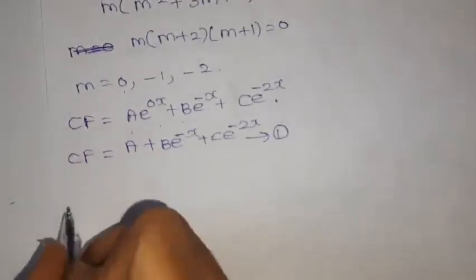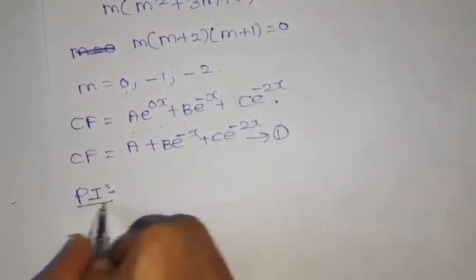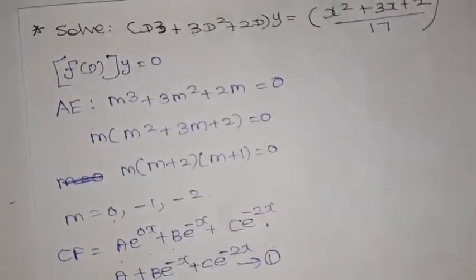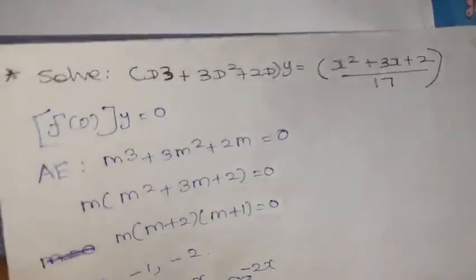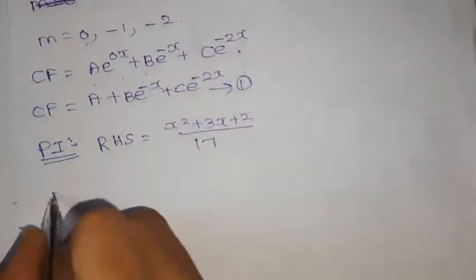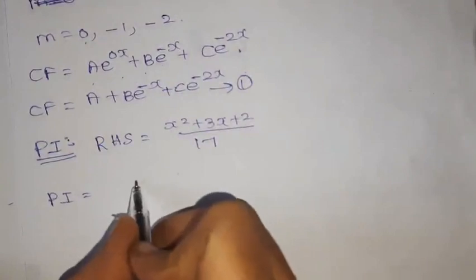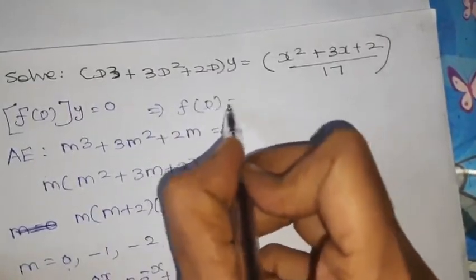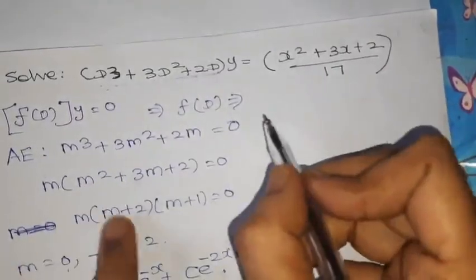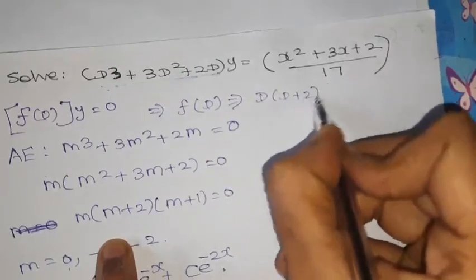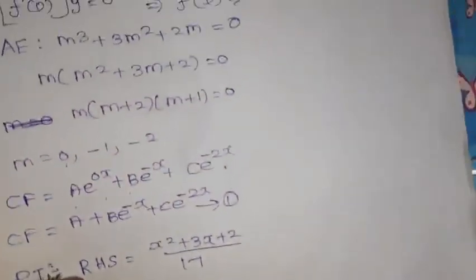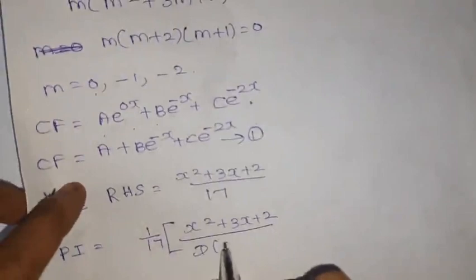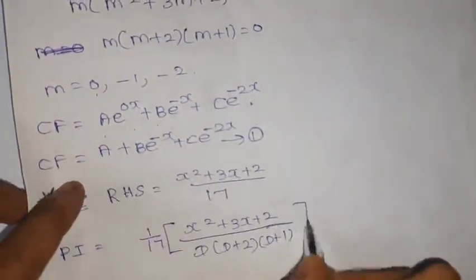To find the particular integral, we use RHS = (x² + 3x + 2)/17. So PI = (1/17) · (x² + 3x + 2) / f(D). The f(D) = D(D+2)(D+1) can be factored as D · (D+2) · (D+1). We need to rearrange the denominator into the 1 + D form.